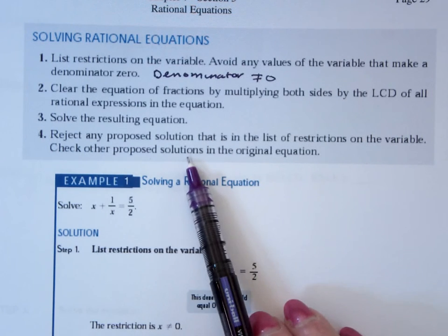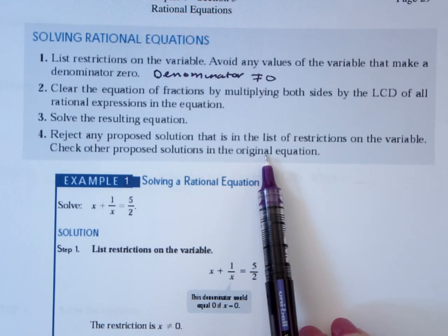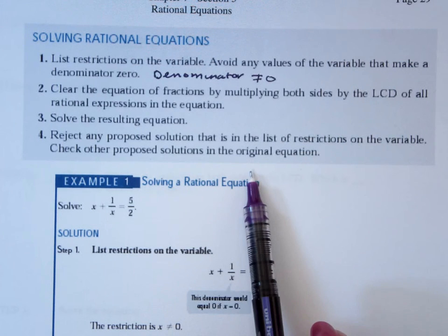Four, reject any proposed solution that's in the list of the restrictions of the variable, and check other proposed solutions in the original equation.